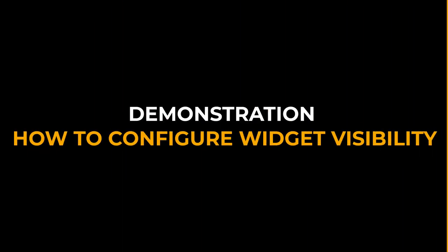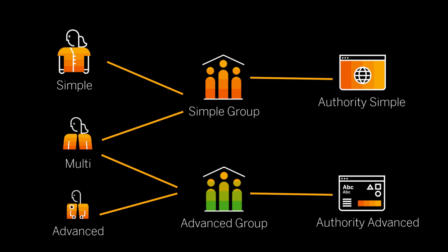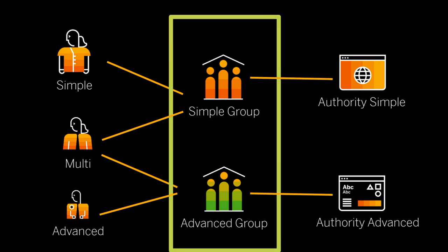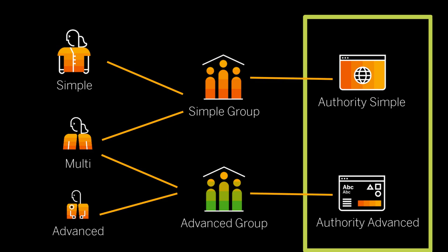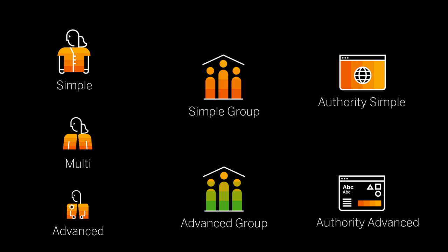Let's view a demonstration of how to configure widget visibility for different authority groups. Each user can be assigned to multiple authority groups. Each authority group can have multiple authorities, although in this case each group has exactly one authority. For the purpose of this demonstration, I previously set up a system with some authority groups and users.